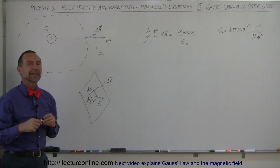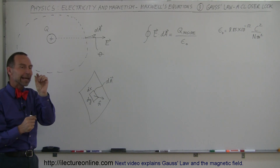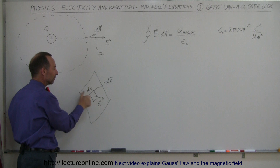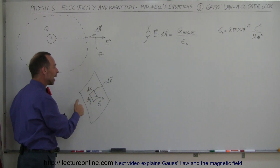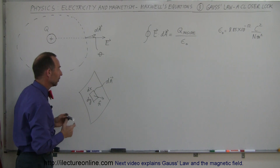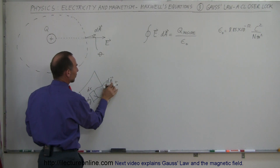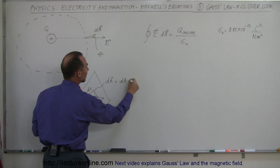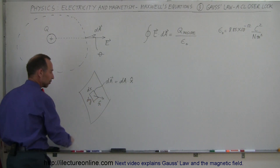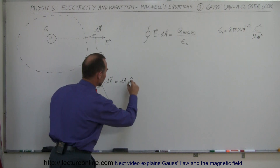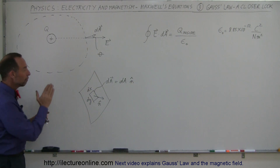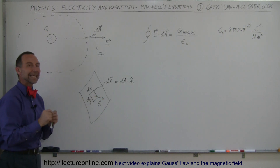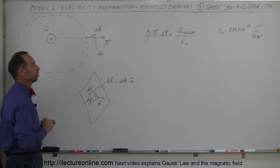What we call a vector surface element, dA, is a very small little area on the surface. It's the product of the width times the length — if the width is dx and the length is dy, then dx times dy equals dA, the little area element. The vector area element is dA equals dx times dy times the unit vector perpendicular to the surface, which we call the n vector — the normal vector, the perpendicular vector to the surface.